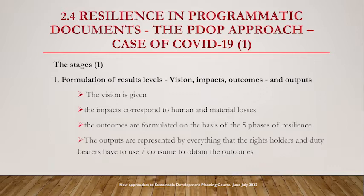In general, the vision is given — it is not something directly linked to disaster management or resilience, so you don't have to formulate the vision in this framework. The second element is to formulate the impact, which generally corresponds to human and material losses in relation to the specific disaster being addressed — in this case, COVID-19.